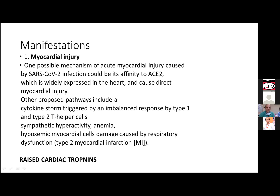Other proposed pathways include a cytokine storm, which seems to be one of the triggers in the second week of infection, causing multi-organ failure and impacting the cardiovascular system. This is triggered by an imbalanced response by type 1 and type 2 T helper cells and mediated through release of large numbers of cytokines such as IL-6, PAF, and other inflammatory cytokines.